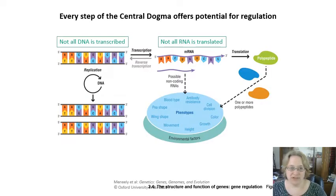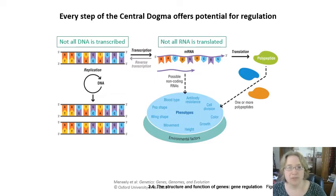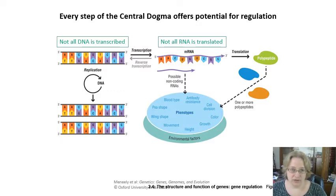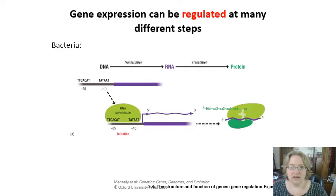There are a lot of different steps in the central dogma, and at each step there's a choice of whether or not this bit of information is going to get passed along to the next part. Not all DNA is actually transcribed into mRNA, and even after it's been transcribed, not all of that RNA is going to get translated into a protein or polypeptide. There are many different points at which gene expression can be regulated.